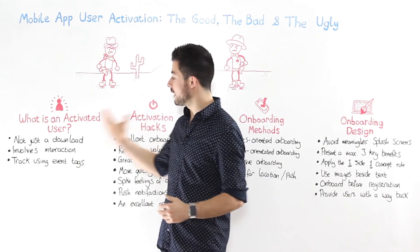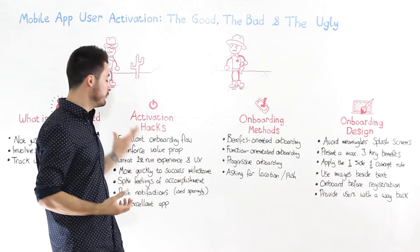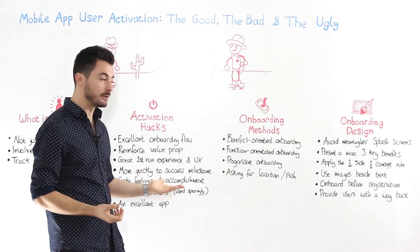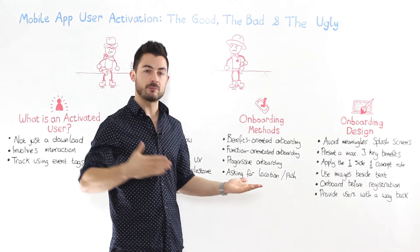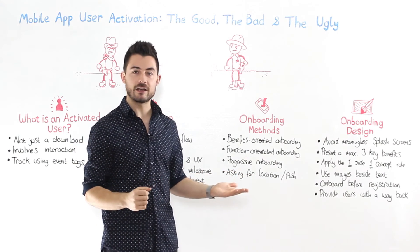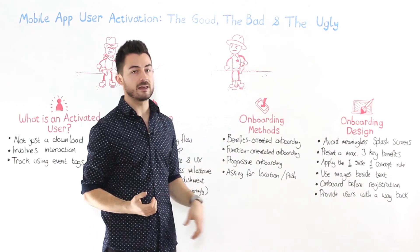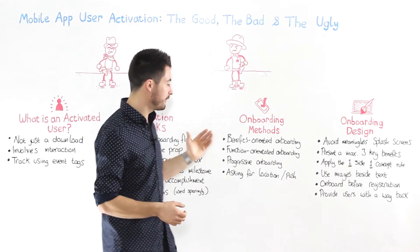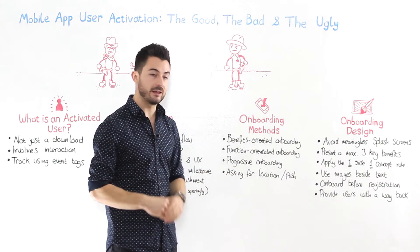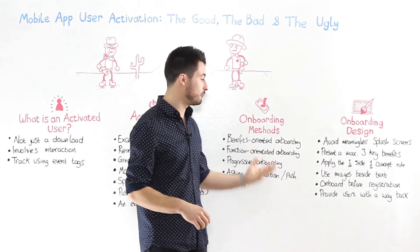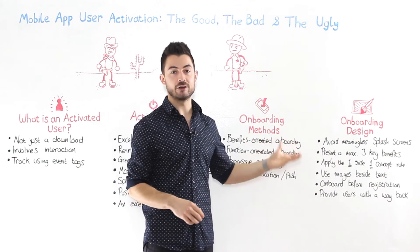So that covers what an activated user is, a couple of hacks in terms of how you're going to onboard these users, and reinforcing the value proposition. Don't forget to spike those feelings of accomplishment when someone does something successful, because that's going to spur them on to the next thing and create that cycle of success. Personally, I prefer the benefit approach mixed with a little progressive onboarding, asking for location and push access at the right time, and paying attention to good design heuristics.